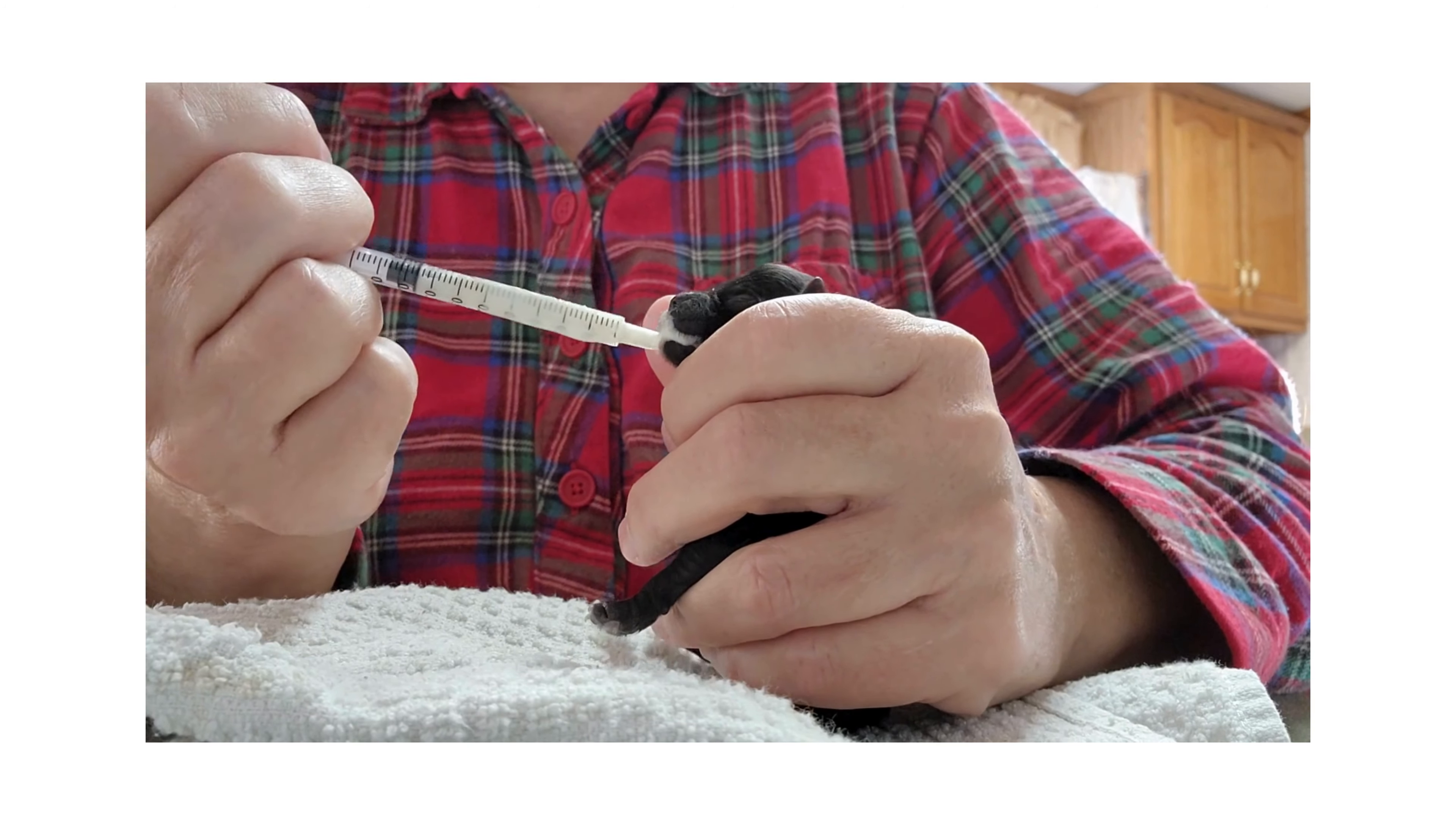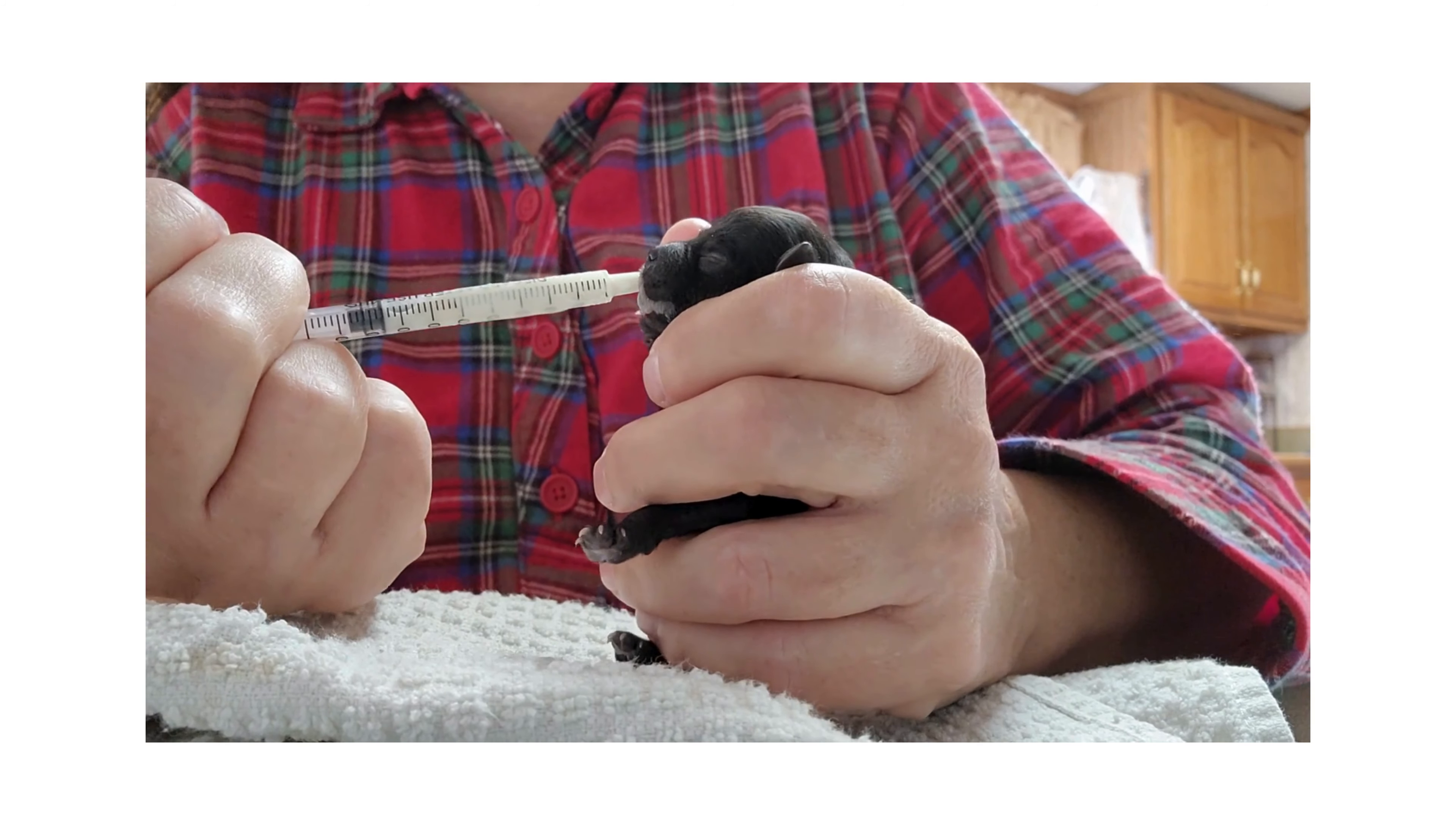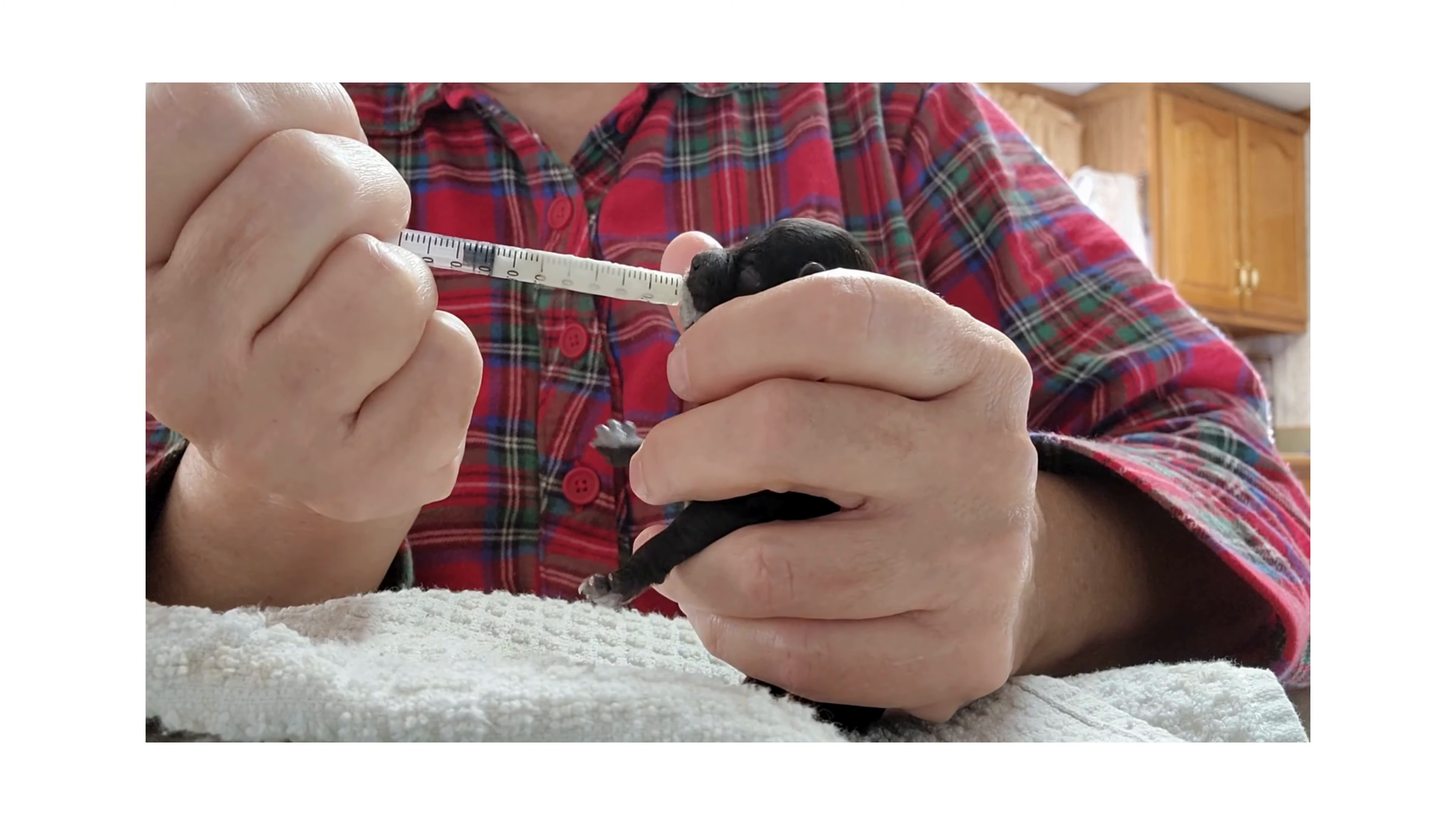If the puppy is weak and not doing well at all, then feed half that amount and just feed twice as often. So you would feed one and a half ccs every two hours. They just need it a little more often. If you're getting the full amount into the puppy every four hours, then he will be just fine.